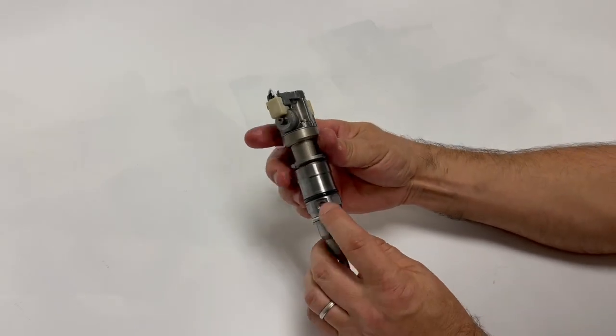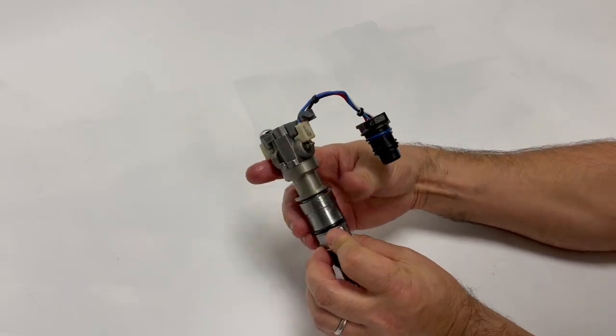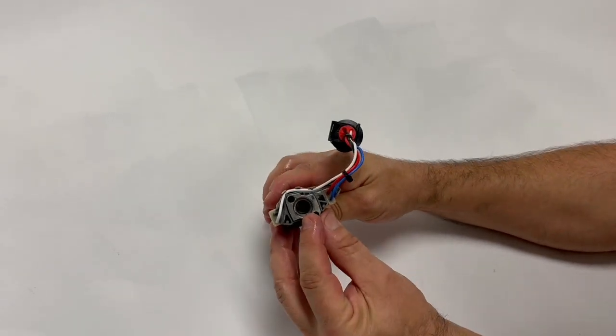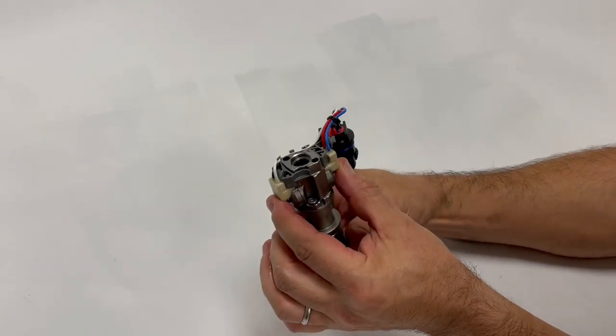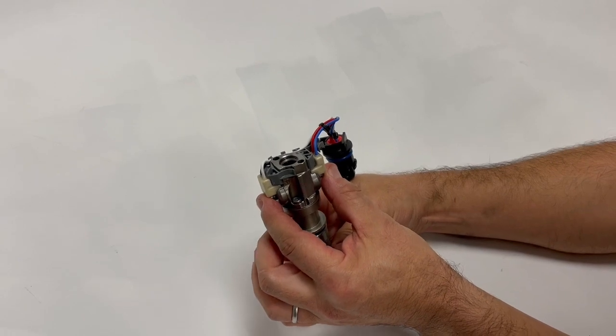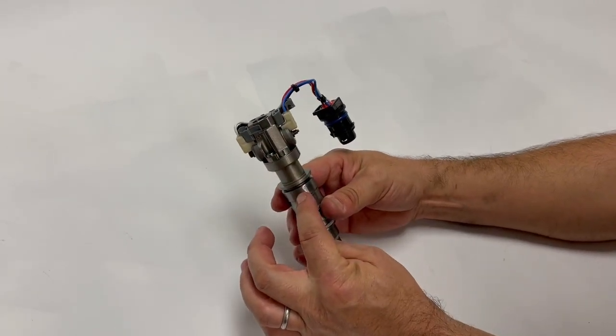Fuel will enter these ports here and the oil enters up here and is controlled by electronically controlled spool valves that open and close and allow that oil to enter the pressurization chamber.